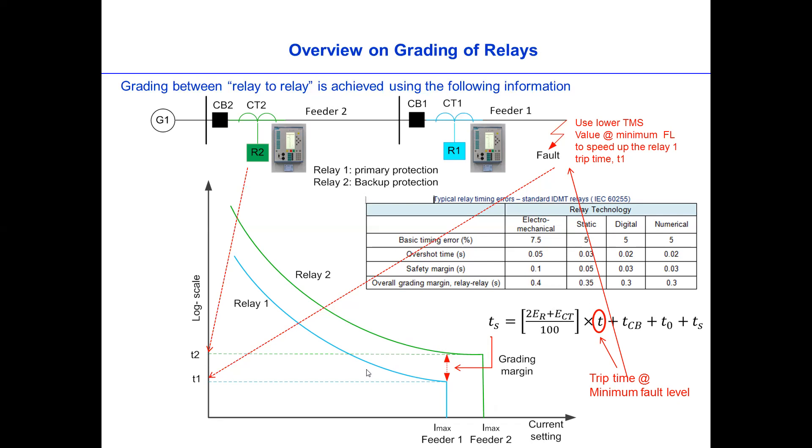And then the next step is we can then add this T1 with the grading margin. And then we can call it T2, so that this relay will trip the fault on here at time 2. So that T2 would be T1 plus the grading time. Then this is the trip time at time 2.